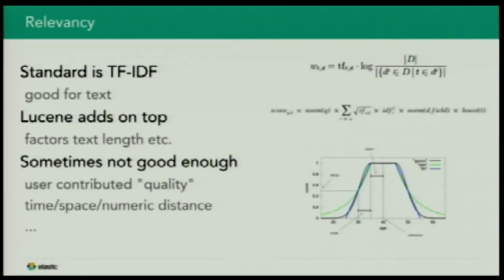We can keep building on top of that. Lucene, for example, adds another factor: normalization for the length of the field. It's essentially equivalent to saying there's a fish somewhere in the ocean — probably true, not really surprising. But if you say there's a fish in a bucket of water, that's much more actionable. If you find a match in a very short field like a title compared to a body, that probably means much more. So we already have a formula baked into Lucene and Elasticsearch that works very well for text search.